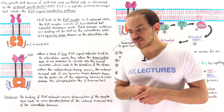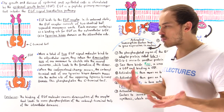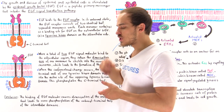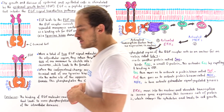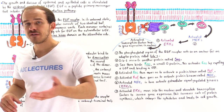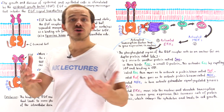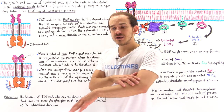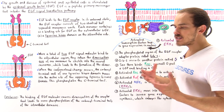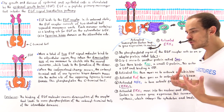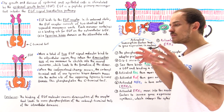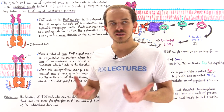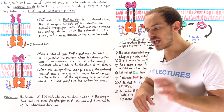Two important types of cells found in our body are epidermal cells and epithelial cells. Epidermal cells are found on the largest organ of our body, the skin, and epithelial cells are basically found covering the inside portion of different organs and different structures of our body.